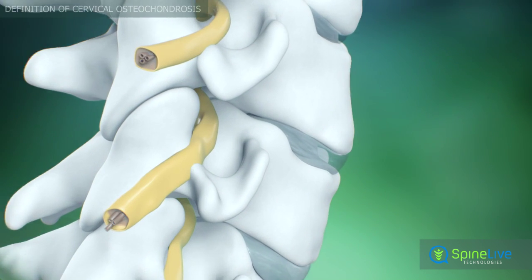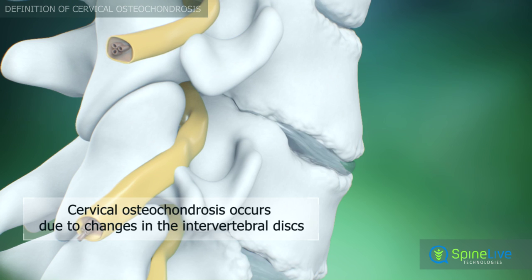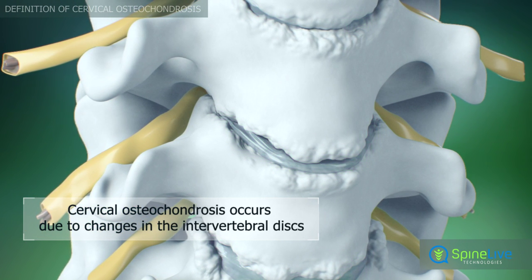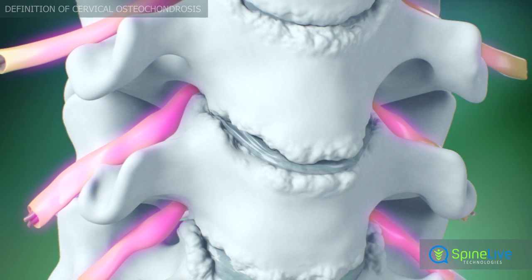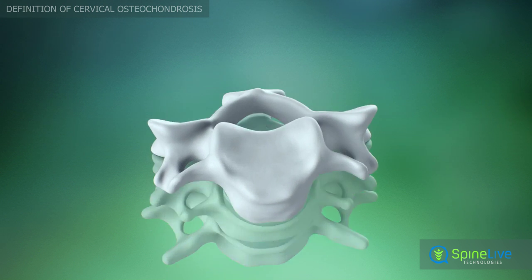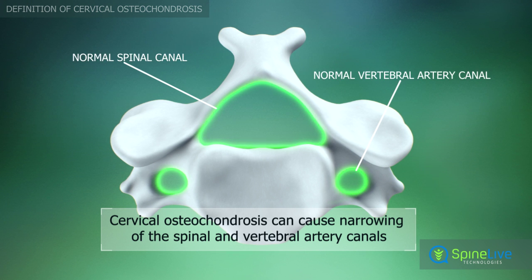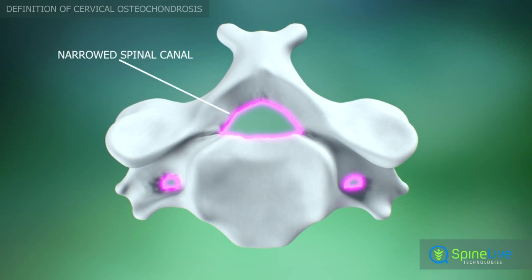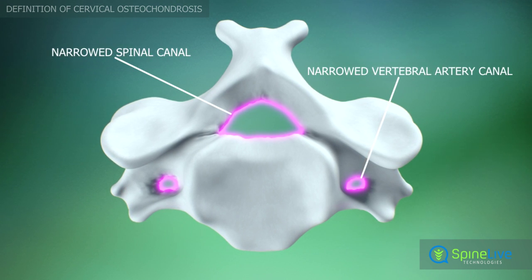Cervical osteochondrosis is a disease of the spinal bones and joints of the neck due to changes in the intervertebral discs, which are meant to cushion and protect the vertebrae. It results in pain and other symptoms due to compression of nerves. Cervical osteochondrosis causes narrowing of the vertebral artery canal and the cervical canal, causing compression of blood vessels and nerve structures, which can lead to neurological symptoms.